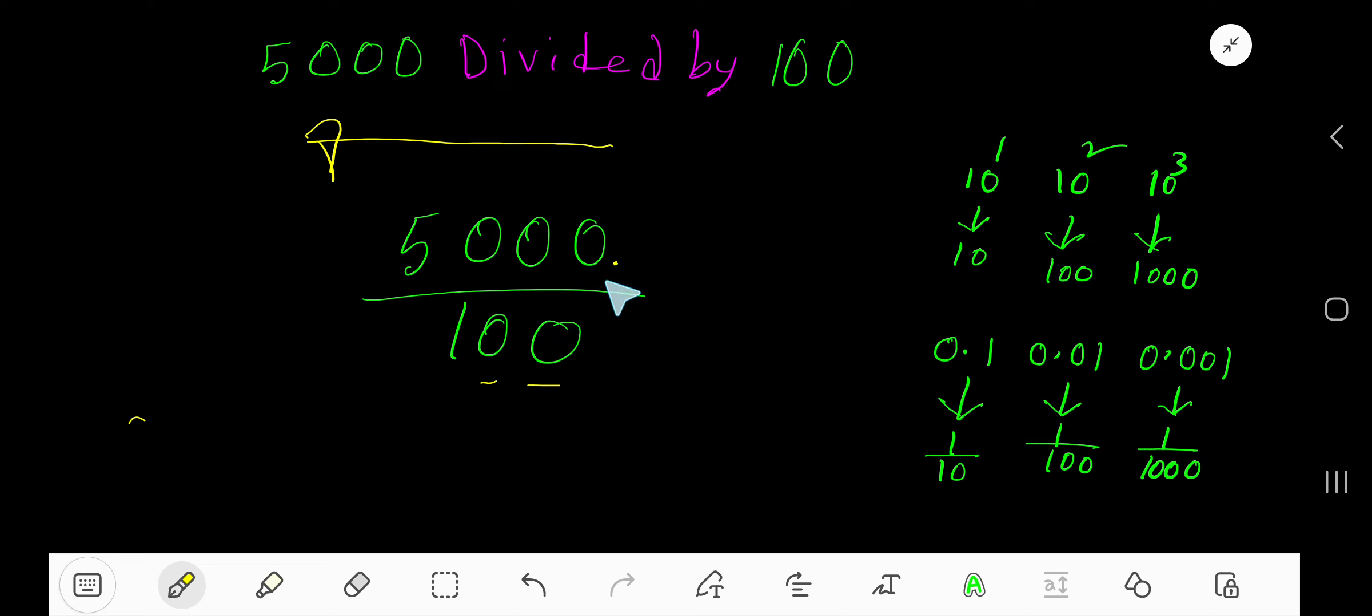Then one digit, two digits. So we are getting five zero decimal zero zero, which means 50. So our answer is 50, or the quotient is 50.